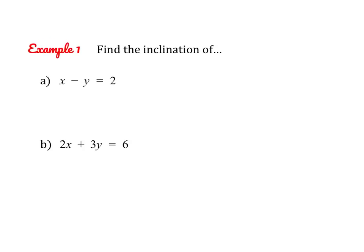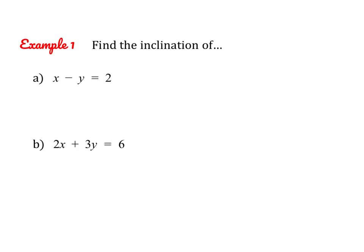Let's try these first two examples together. I'm going to do a really rough sketch of x minus y equals 2. If you put this into slope-intercept form, it's y equals x minus 2, so I know that it looks something like this. I can see that the inclination we're going to find is this angle right here — remember, it's between the x-axis and the line moving counterclockwise. The formula we know is m equals the tangent of your inclination, and I know that the slope of this line is 1.